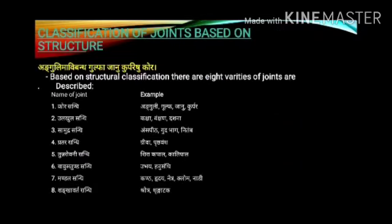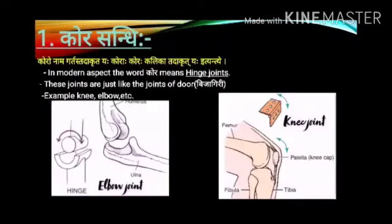Classification of joints based on structure: Based on structural classification, there are eight types of joints. They are as follows: Kora Sandhi, Ullukhulla Sandhi, Samudra Sandhi, Prathara Sandhi, Tuna Sevani Sandhi, Vayustunda Sandhi, Mandala Sandhi, and Sankhavarta Sandhi.